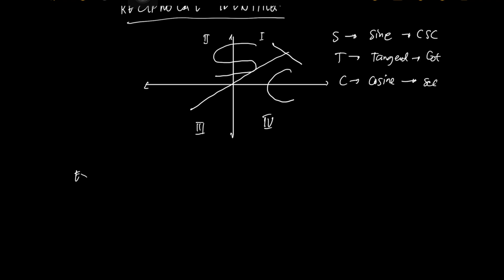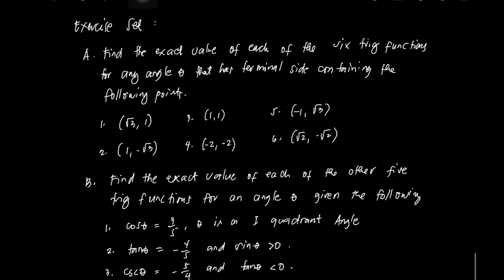So let's have some exercise. For letter A, find the values of the six trig functions given the points on the terminal side of the angles. For letter B, find the exact value of each of the other five trig functions for the given conditions.